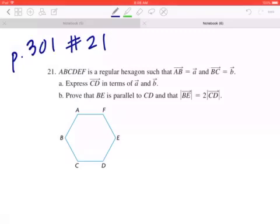Hi everyone, we're looking at number 21 on page 301. The question says ABCDEF is a regular hexagon such that AB equals to A and BC equals to B. So before we read parts A and B, let's add this to the diagram.